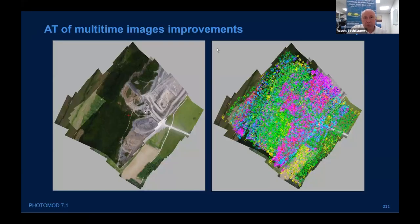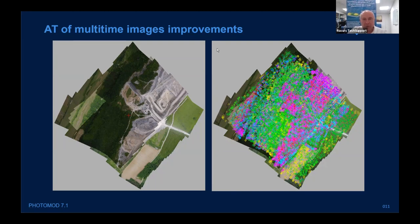Multi-time image improvements: still talking about aerial triangulation — sometimes we have to make projects based on images from different times, different days, sometimes even different seasons. We made improvements for this kind of project, and we already have samples that were not processed in 6.5 but were successfully processed in 7.1.